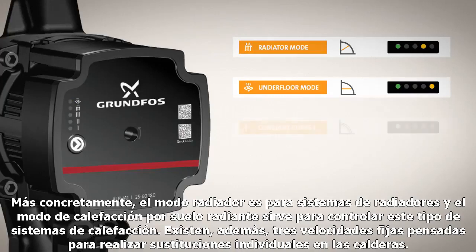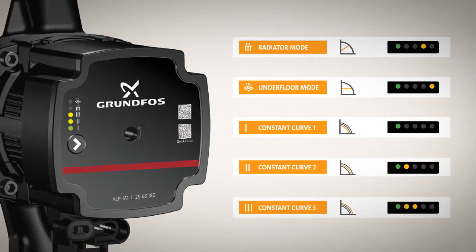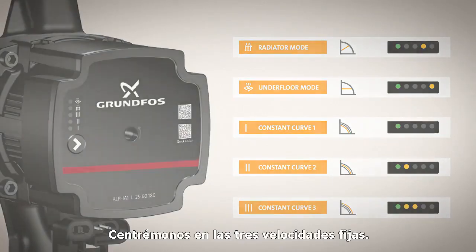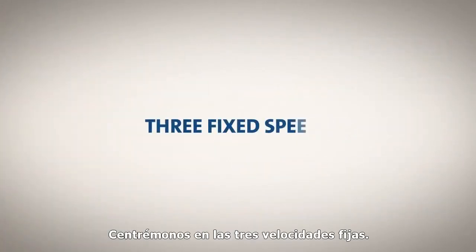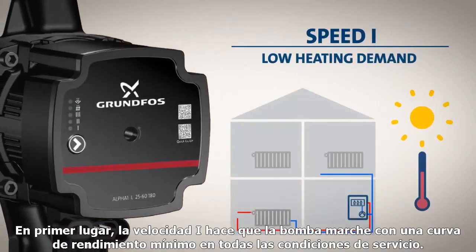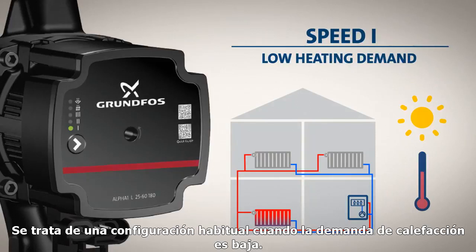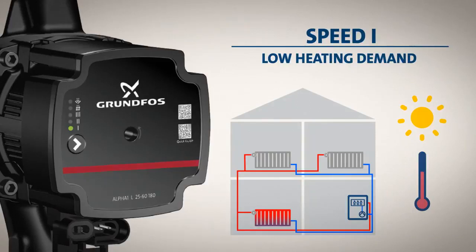And then there are three fixed speeds, which are intended for one-to-one replacements in boilers. Let's take a closer look at the three fixed speeds. First of all, speed 1 sets the pump to run on the minimum performance curve under all operating conditions. This is a common setting when the heating demand is low.